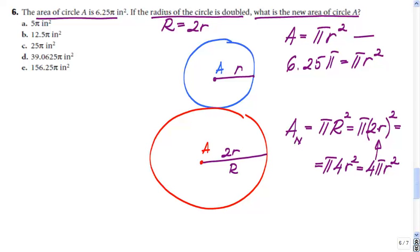Well, pi r squared was our older area. So this tells me that the new area, area of the larger circle with the double radius compared to the initial one, will be 4 times the area of the initial circle. Which is what? 6.25 pi.